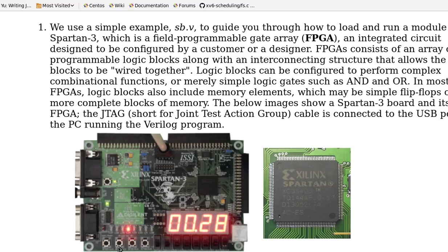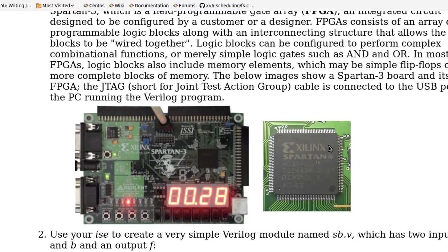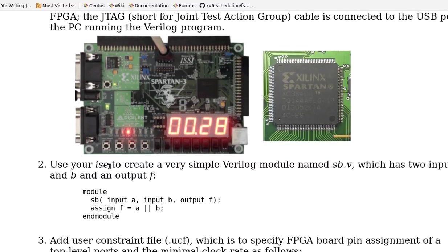These are the push buttons. We will use ISE to create a very simple Verilog model named SB.V. It has two inputs A and B. We will use switch 0 to represent A, and switch 1 to represent B. LED 0 will be F. This module is very simple — it's just an OR operation: F equals A or B, and that's it.